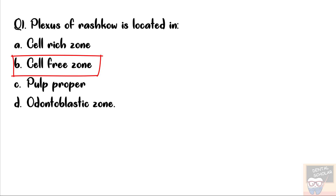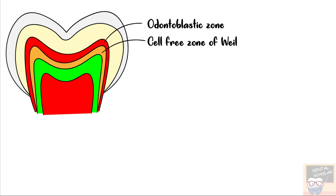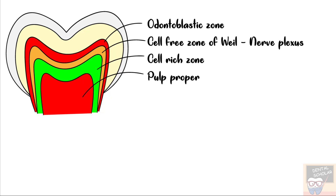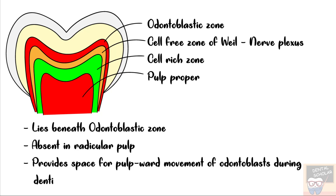The different zones of pulp: the outermost zone is the odontoblastic zone. Next to it is the cell free zone, where the nerve plexus of Reshko is found. Next is the cell rich zone, where the main cell found is fibroblast. The innermost zone is pulp proper. The cell free zone lies beneath the odontoblastic zone, is absent in radicular pulp, and provides space for the pulpward movement of odontoblasts during dentinogenesis.